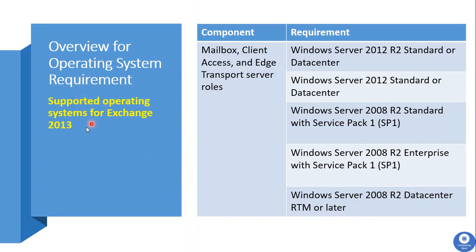For the operating system requirement, Exchange Server 2013 can be installed on the following Windows Server versions. The minimum operating system required is Windows Server 2008 R2 Datacenter RTM or a later version, and the highest supported Windows version is Windows Server 2012 R2 Standard or Datacenter. Exchange Server 2013 cannot be installed on Windows Server 2016 or Windows Server 2019. It is recommended to install Exchange Server 2013 on Windows Server 2012 R2.